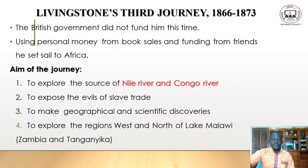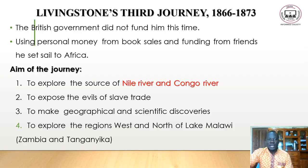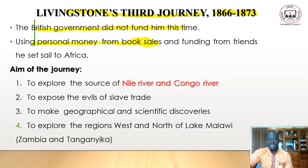Livingstone was not discouraged by failure — he kept returning to Africa. He embarked on a third journey between 1866 and 1873. This time the British government did not fund him; he used personal money from book sales, which were very popular because people wanted to learn about Africa, as well as funding from friends.